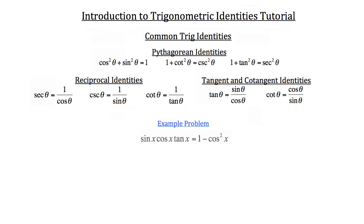The next problem: sine of x times cosine of x times tangent of x is equal to 1 minus the cosine squared of x. Notice already that we have a cosine squared of x. The only identities dealing with squares that you know so far are the Pythagorean identities, so pay particular attention to those. You'll find little indicators through these problems that will help you. Because of that equal sign, all we're doing is verifying an identity — in the end we'll get something on the left equal to the exact same thing on the right.